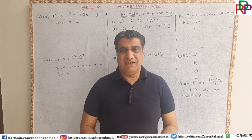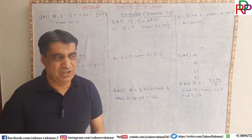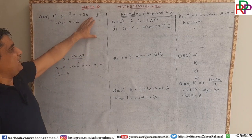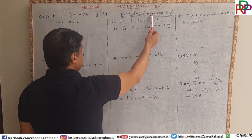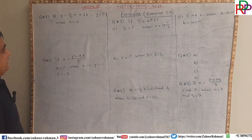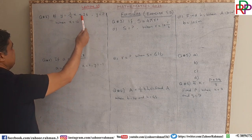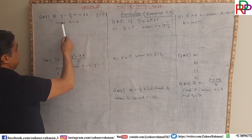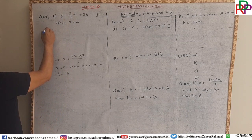Let us learn the technique of how we use formulae when the values of variables are given. We are starting Exercise 5b. The first question says: if y is equal to 3 over 5 x plus 26, find the value of y when x is equal to 12.